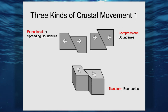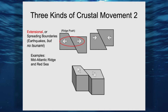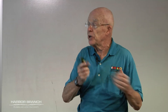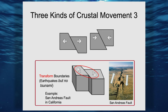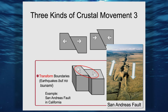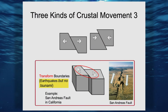There are three kinds of plate boundary movement. First, when two crustal plates are moving away from each other, they're spreading boundaries — called an extensional boundary. That's the same as the ridge push. We can get earthquakes from that, but no tsunamis. Second, when two crustal plates are side by side and move along each other — this is the San Andreas Fault — that's called a transform boundary. Again, you can get earthquakes from that, but no tsunami.